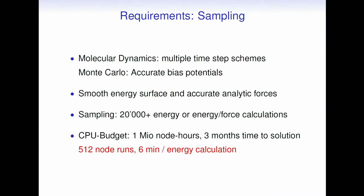Single-point simulations are not enough — we have to do sampling, either by molecular dynamics or Monte Carlo. These methods are expensive, so you should do the best you can: use multiple-time-step schemes or very accurate bias potentials so you can get a long way without a full high-level calculation. We also need smooth energy surfaces, or Monte Carlo will not work, and accurate analytic forces for MD. For water at ambient temperature, we need on the order of 20,000 energy calculations — so 20,000 RPA calculations gives us one density of water.